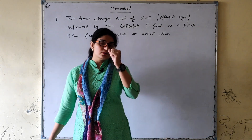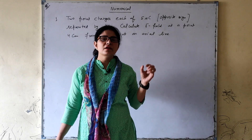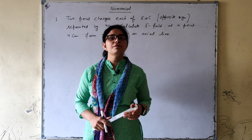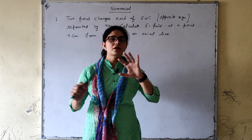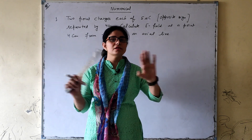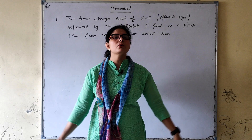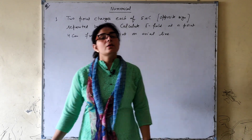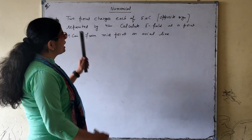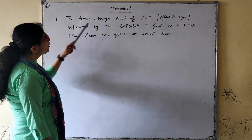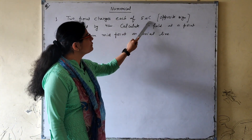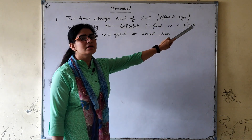These four topics I am going to discuss today, and these are very easy and very interesting numericals. You will feel that if we go through it, these are quite easy and comfortable numericals. So the first numerical I have considered: two point charges, each of 5 microcoulombs, opposite sign.